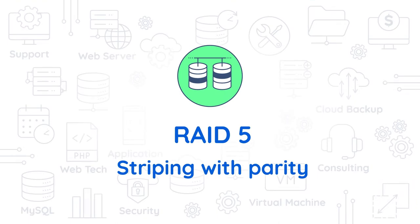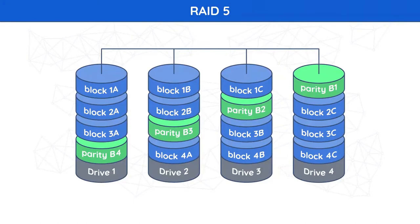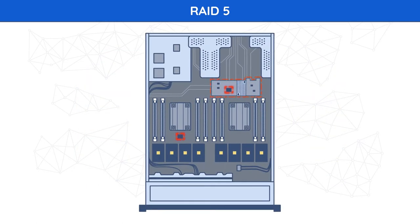RAID 5 — Striping with Parity. RAID 5 is the most common secure RAID level and requires at least three drives. Data blocks are striped across the drives, and on one drive a parity checksum of all the block data is written. However, the parity data is not written to a fixed drive — it's spread across all drives. Using the parity data, the controller can recalculate the data of one of the other data blocks should that data no longer be available. A RAID 5 array can withstand a single drive failure without losing data or losing access to it. Although RAID 5 can be achieved in a software-only scenario, a hardware controller is recommended to offload parity calculations from the CPU to a dedicated chip and avoid a possible write hole by using the RAID battery.